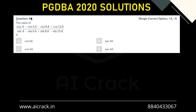Hi everyone, it's question number 49: cos a minus cos 5a minus cos 9a plus cos 13a divided by sin a minus sin 5a plus sin 9a minus sin 13a equals 2. This is a very standard problem of converting summation into product in the case of trigonometric identities. So let's do that.